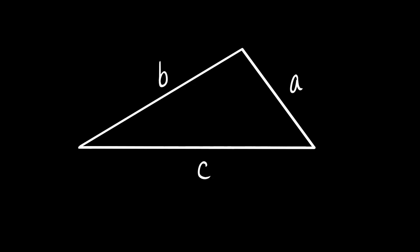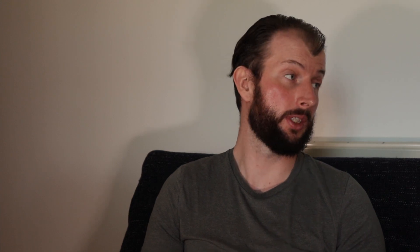There are several ways to derive it, but since you've mentioned Pythagoras, we'll start there. We start off with our triangle with sides a, b, and c, and we draw on our perpendicular height H. We'll call this length here D, so therefore this length is c minus D. Now we've got two unknowns, H and D, so we need two equations to solve for them.